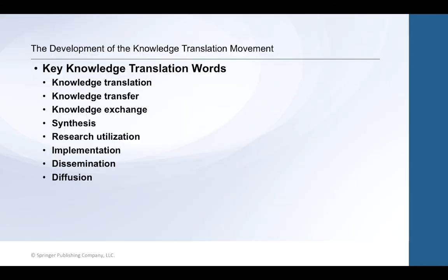Chapter 2 looks at some of the major frameworks for the development of knowledge. It starts with a section on the knowledge translation movement, and the first couple of pages build up to that chart starting at the bottom of page 28—the definitions of key knowledge translation words.